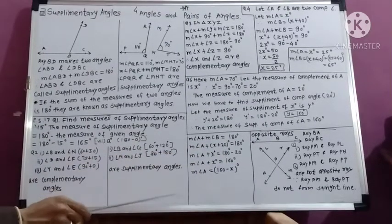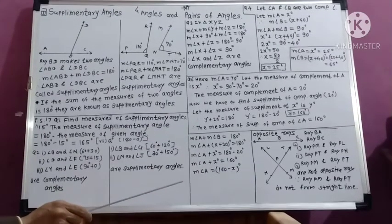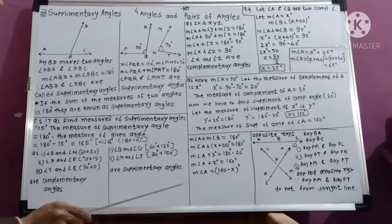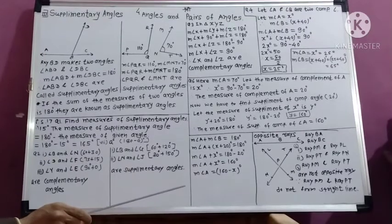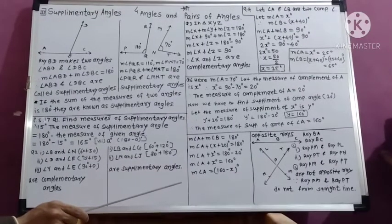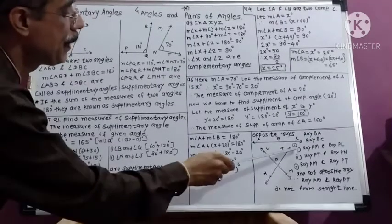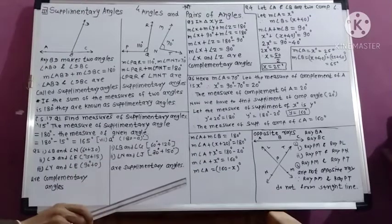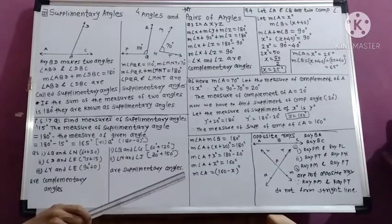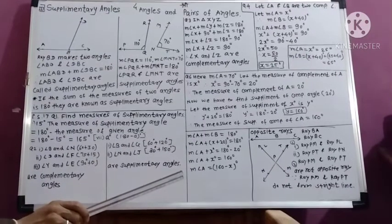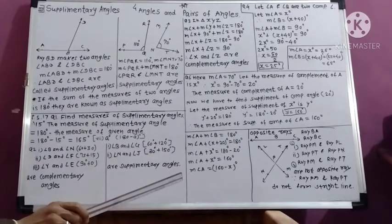In question 2, we are asked: are ray PM and ray PT opposite rays, and why? Ray PM and ray PT are not opposite rays because they cannot form a straight line. This is the answer to the given question. By practicing in this way, you can perfect these examples. Thank you, students.